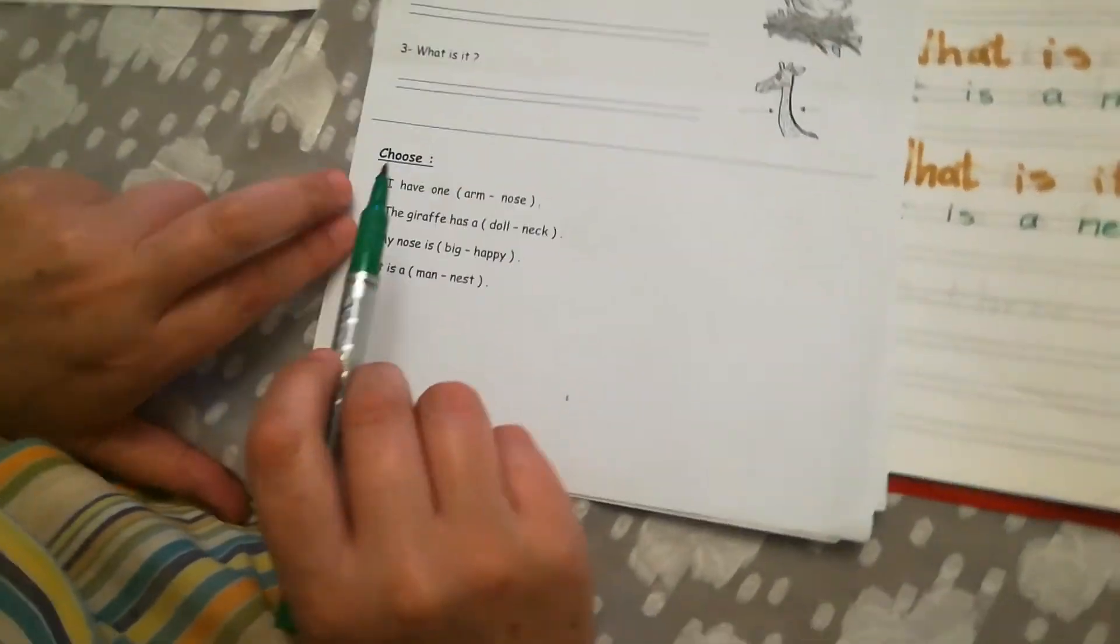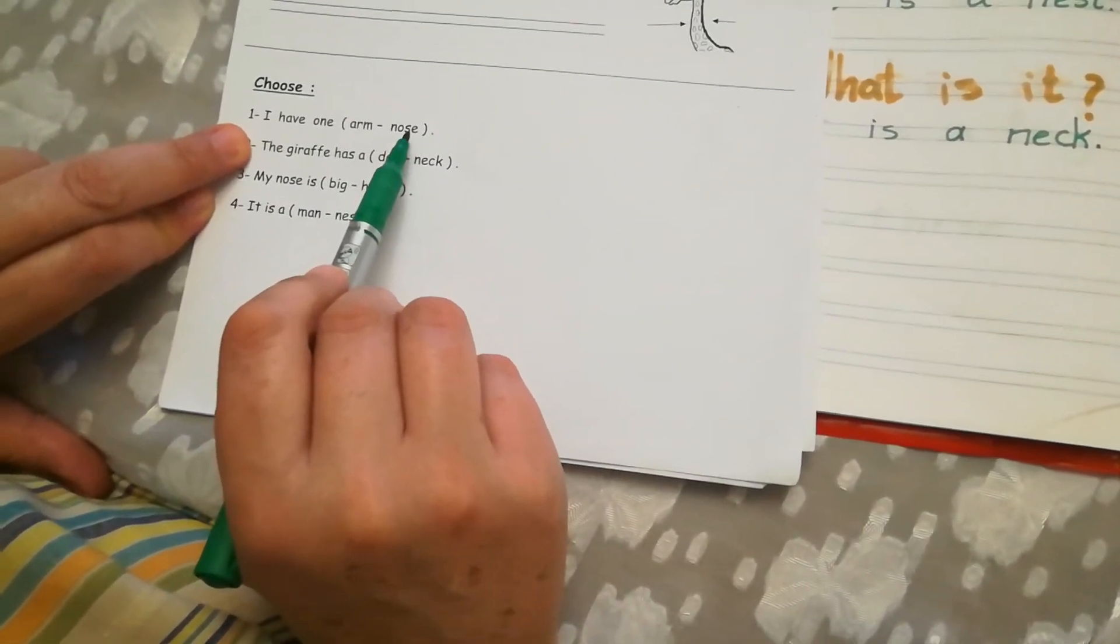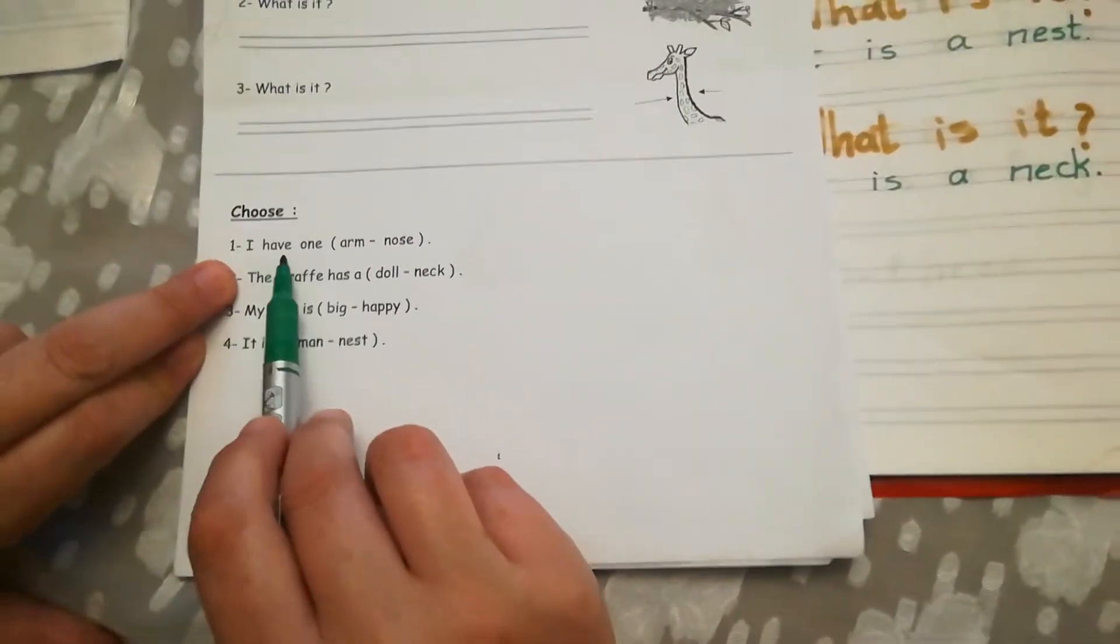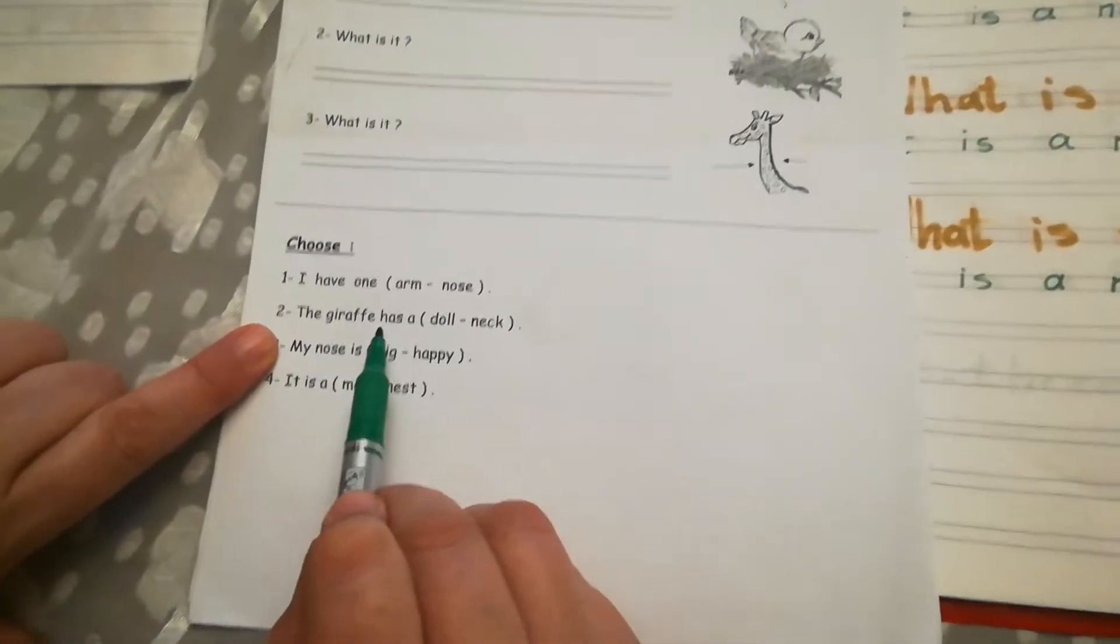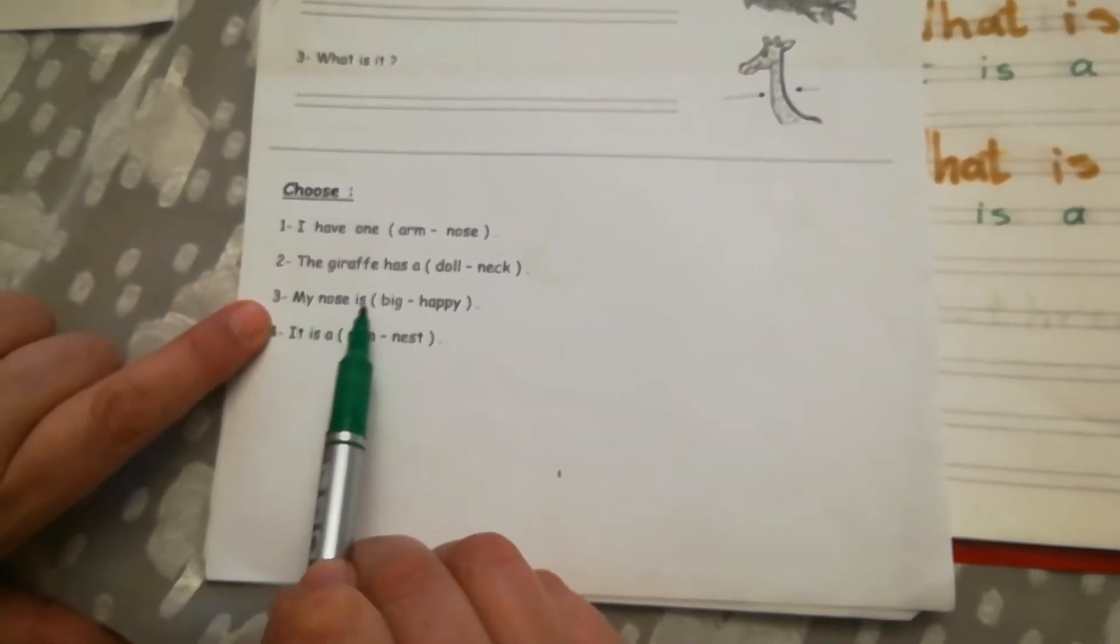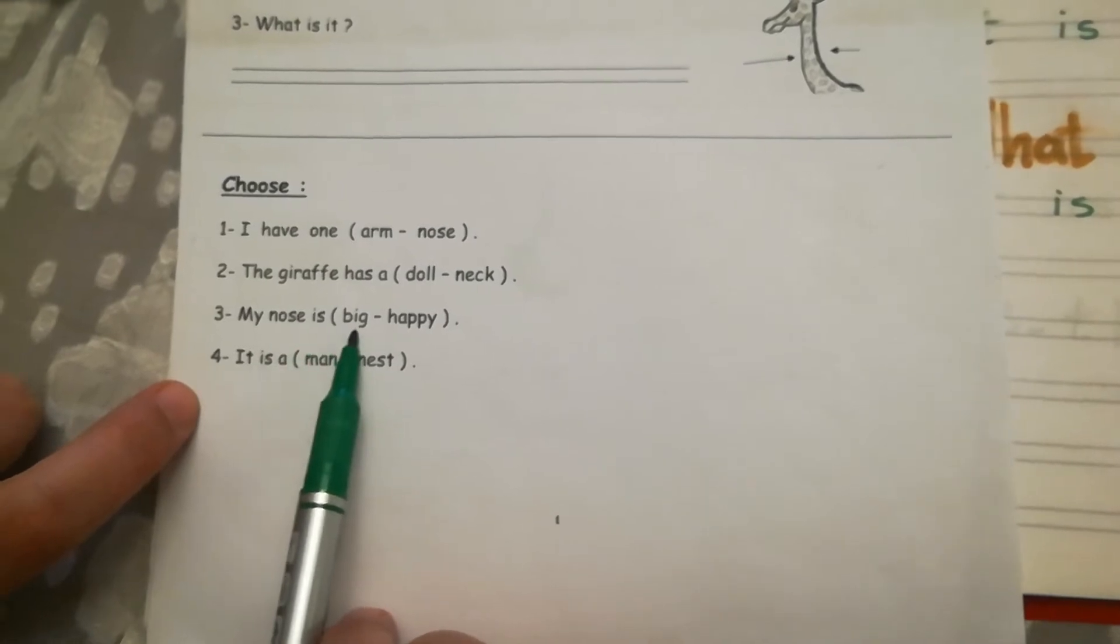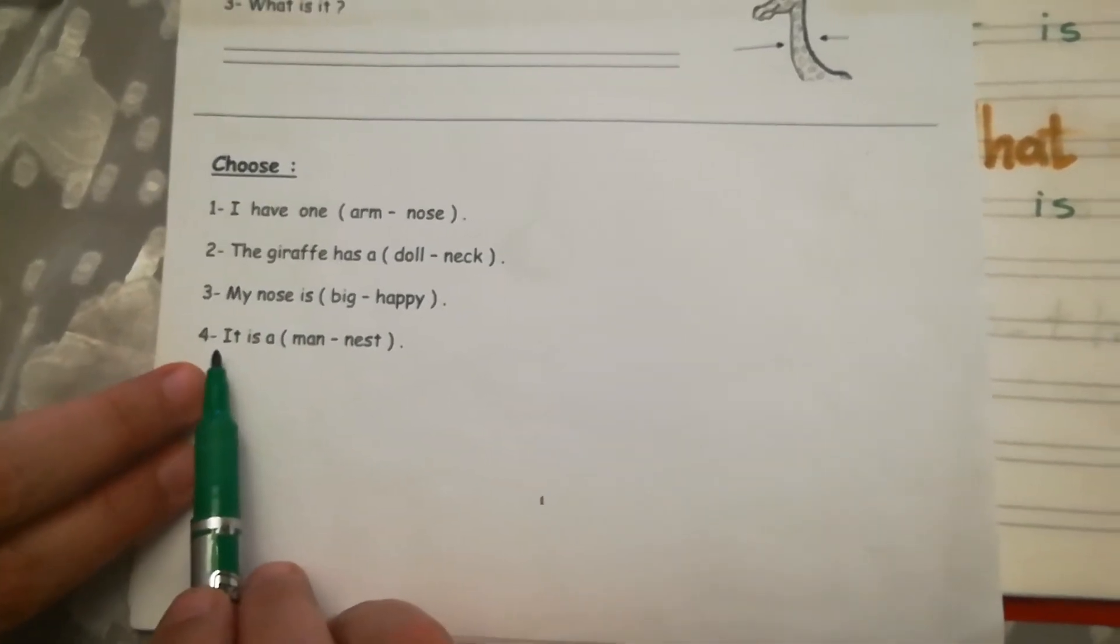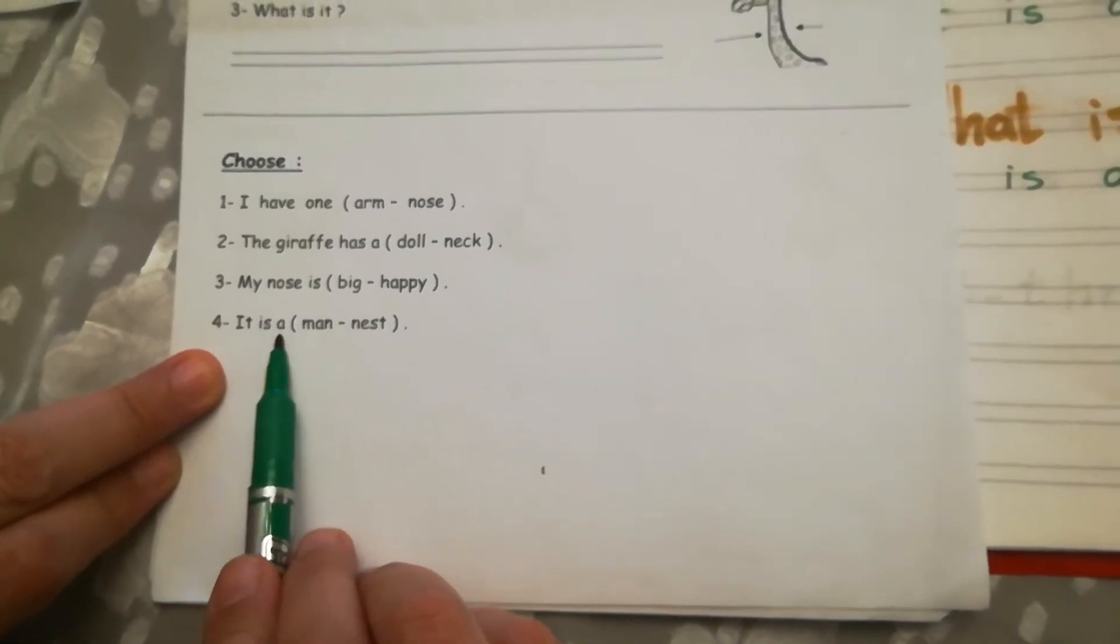Let's read. Choose. I have one arm or nose. One nose. I have one nose. Yes. Next. The giraffe has a doll or neck. A neck. Next. My nose is big or happy. Big. My nose is big. Next. It is a man or nest. It is a nest. Excellent. KG2.